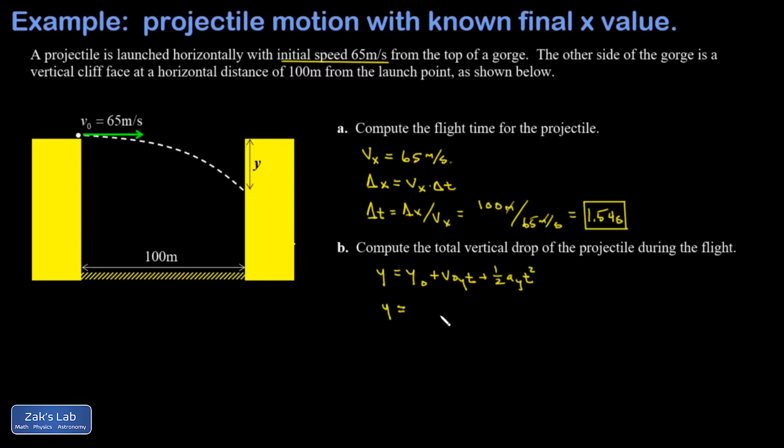I'm going to call my initial y position zero, which means the final y position is going to be negative because it's below that. My initial y velocity was zero because it's a horizontal launch, and I plug in the acceleration induced by gravity, negative 9.8 meters per second squared, and the flight time 1.54 seconds all squared. When I run the numbers on this I get negative 11.6 meters, which is a fine way to express the answer. The minus sign just means it was a drop, or I could express it as a magnitude and say it was an 11.6 meter drop, and we're done.